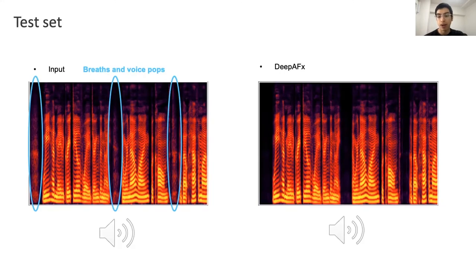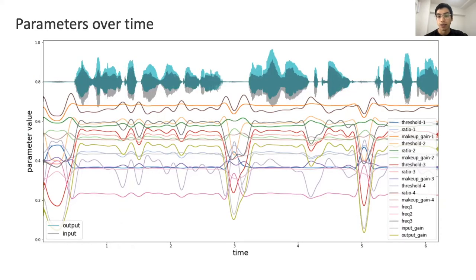Another advantage of our method is that we can check over time how the network is using these parameters, and we can display this as parameter automation, such as is the case of digital audio workstations. This is how the network is using the 17 parameters across this audio segment. And as well, if we notice the regions where the breath and voice pops are present, this is where the network is moving most of its parameters.